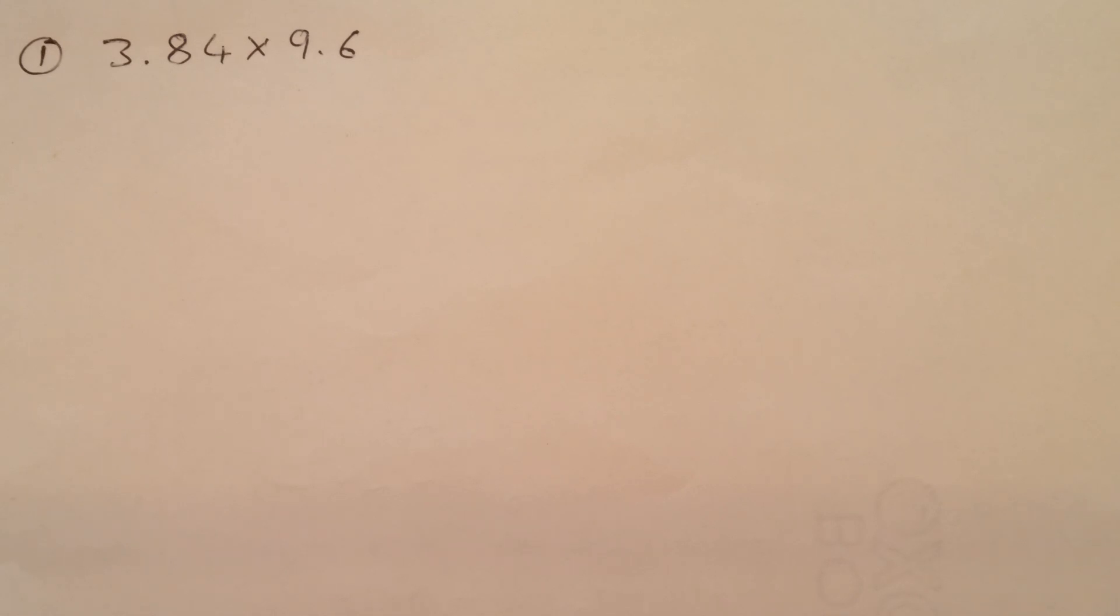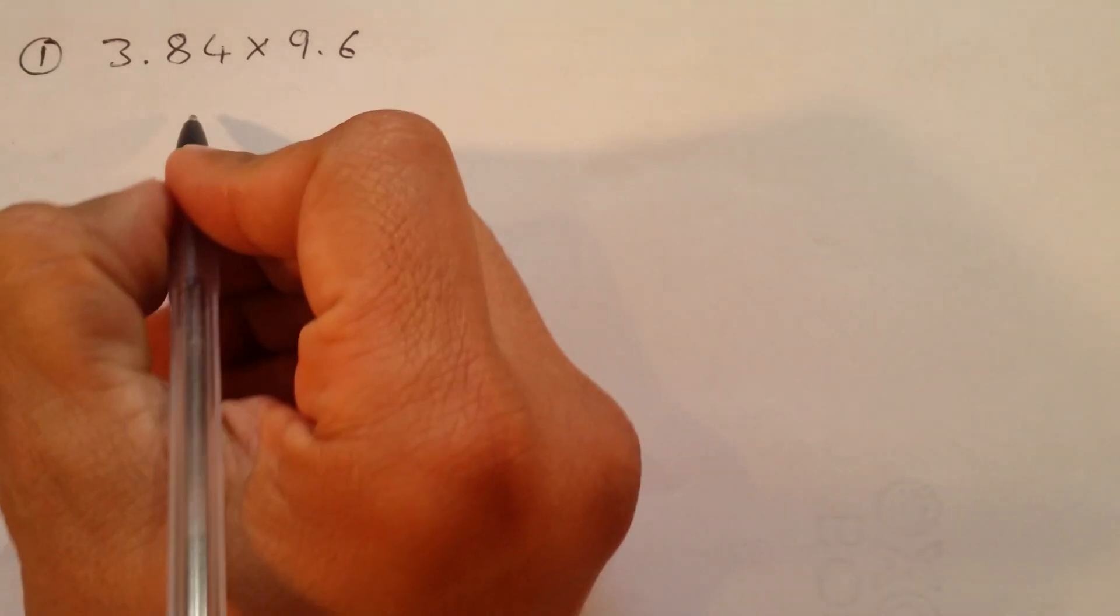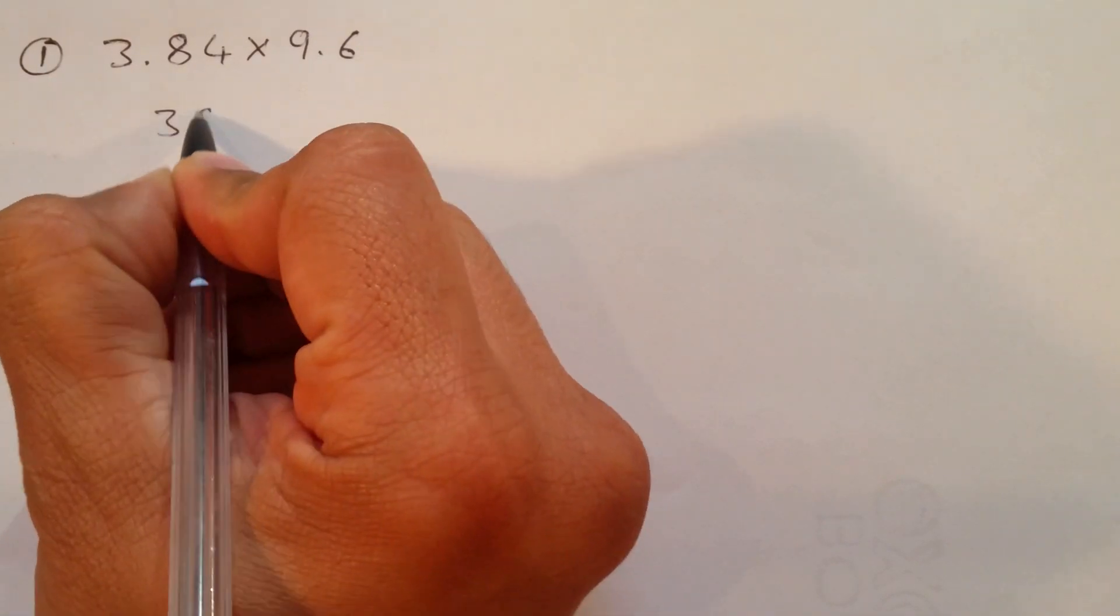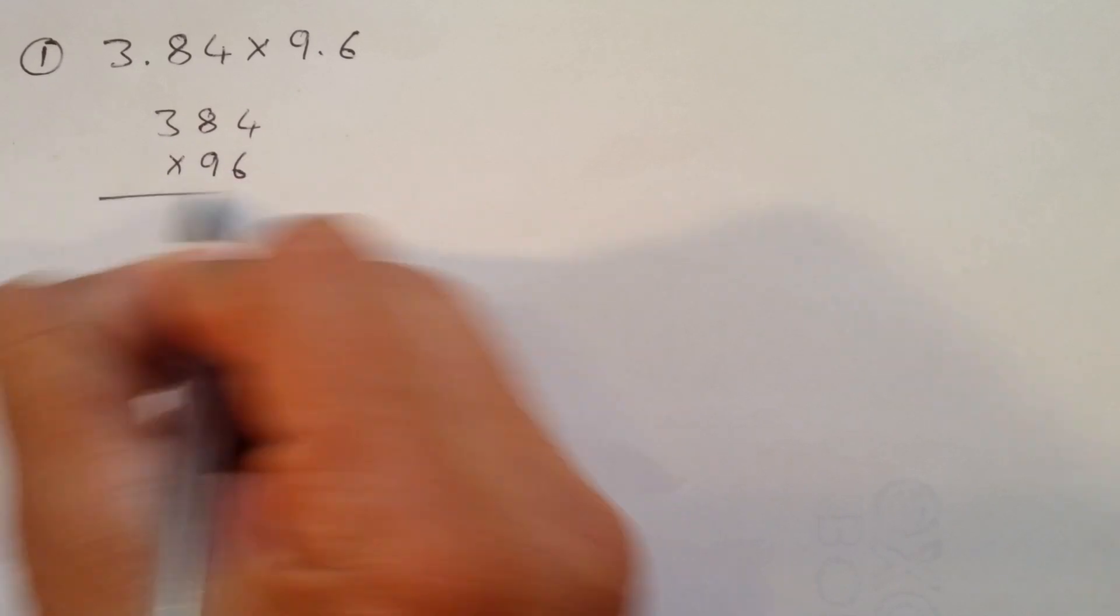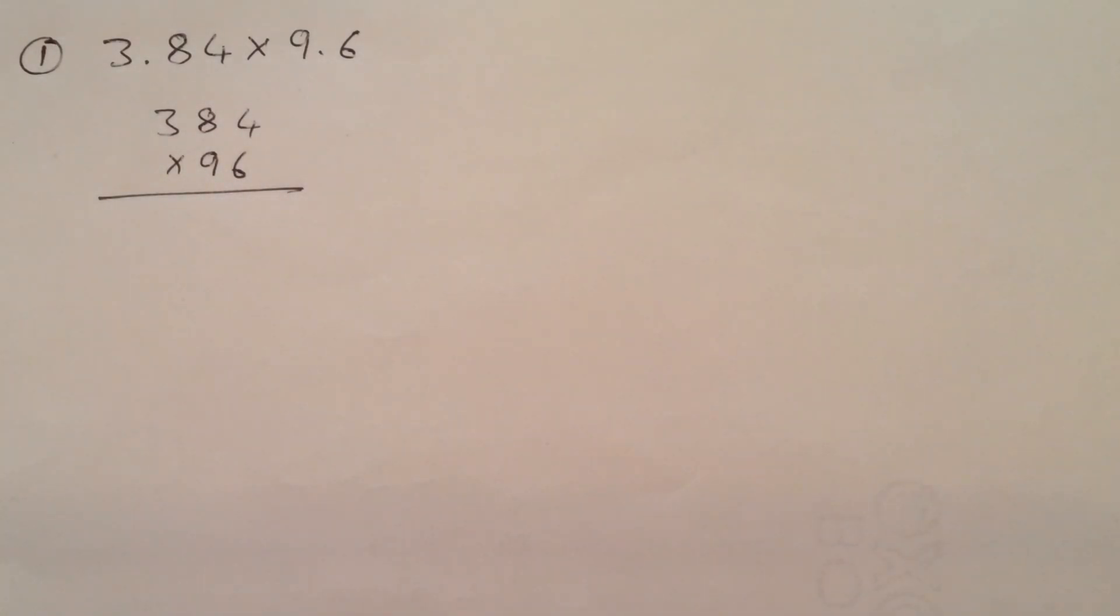And some people do get confused in multiplications as well. So, let's work column method and solve this. It's one of the easiest methods. First thing, I'll ignore the decimal. What I'll do, I'll write 3.84 times 9.6. See, I don't even write the decimal at the moment. Because some people do get confused when they carry the decimal. Easy trick.